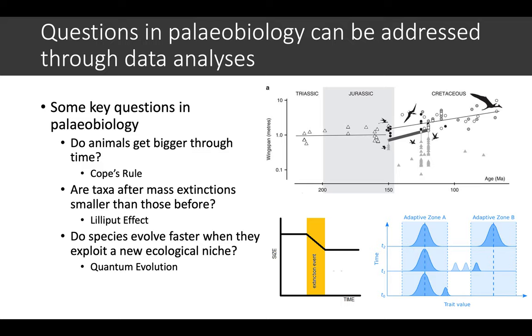Also, things like whether taxa after mass extinction events are smaller than their predecessors could be tested by body size data across different time bins across a mass extinction event, for instance.